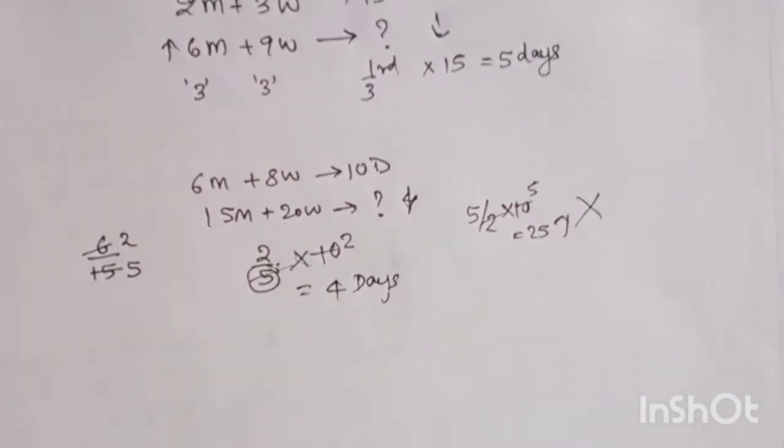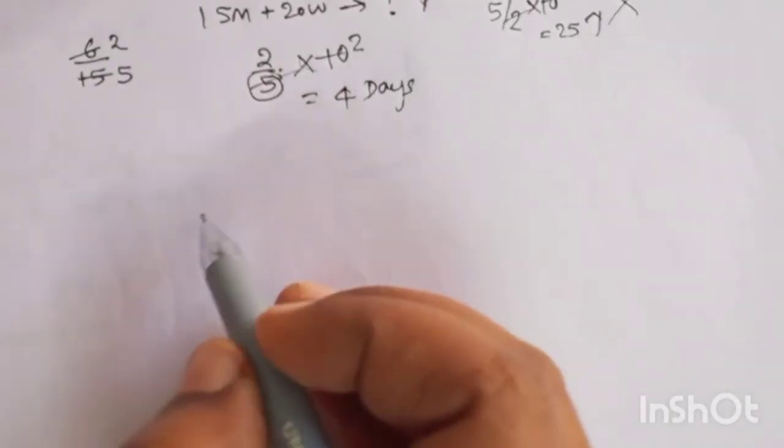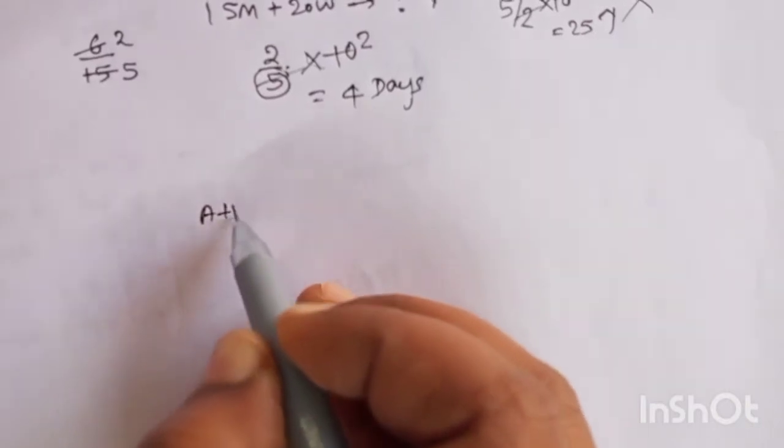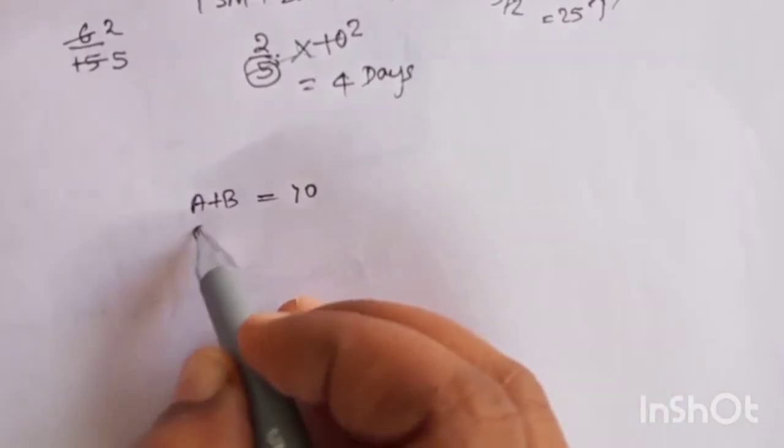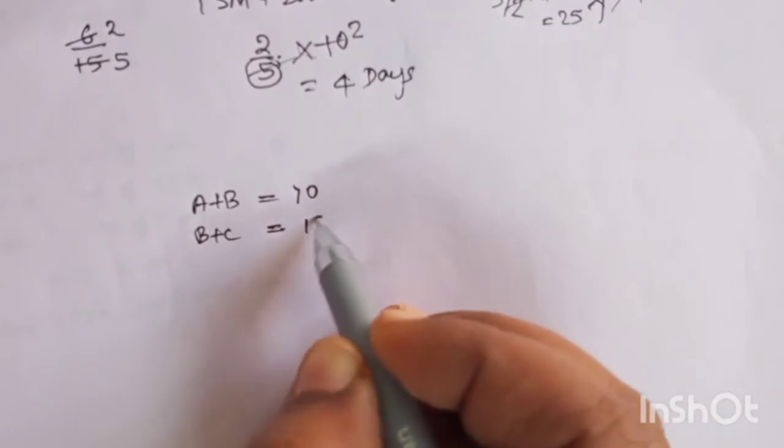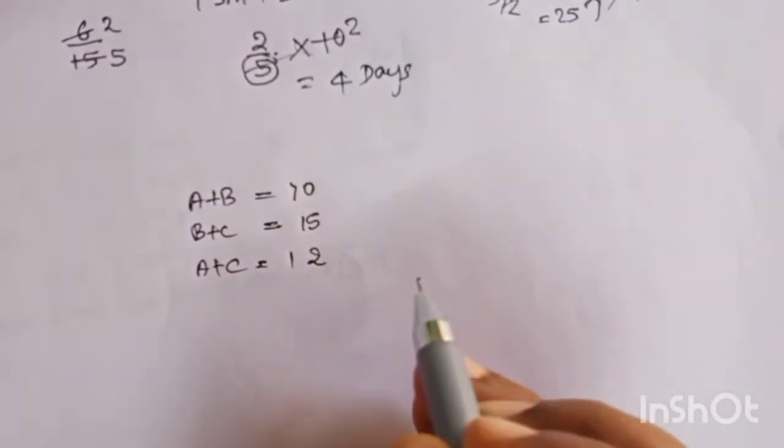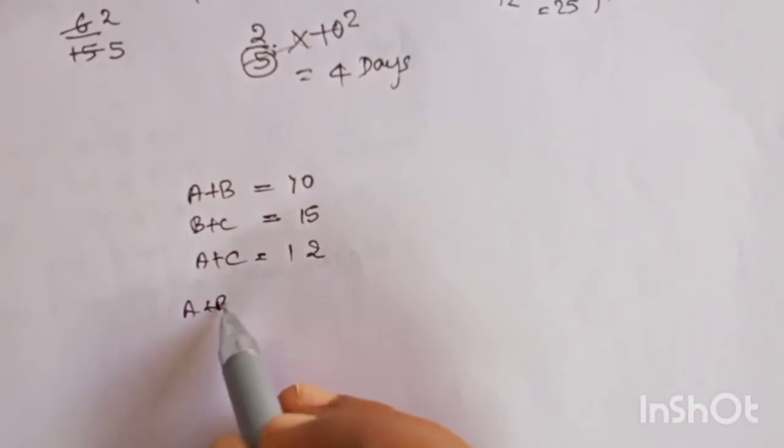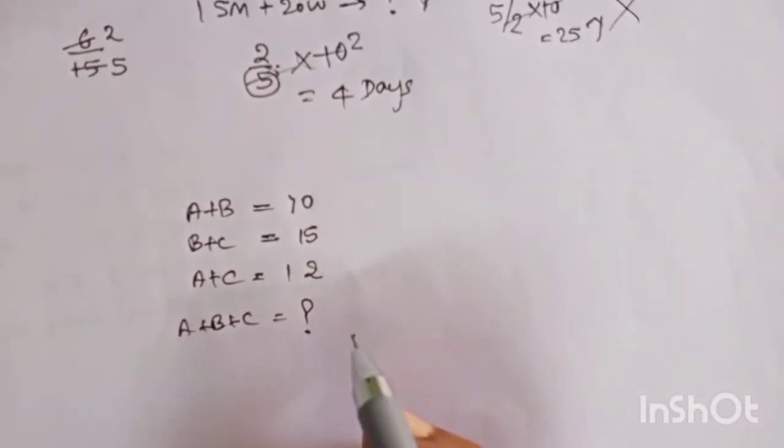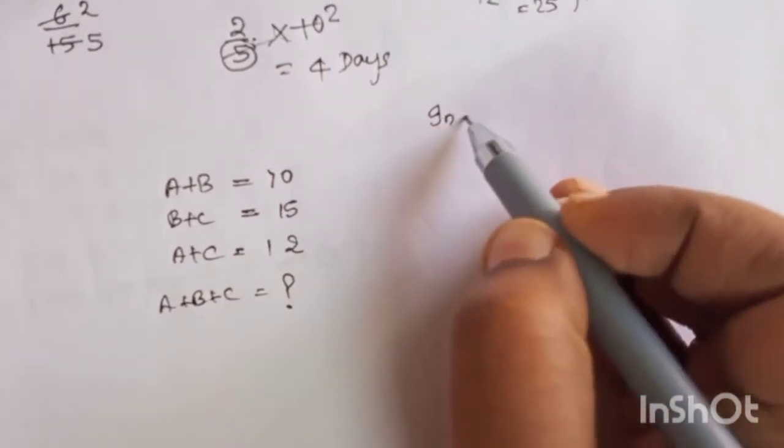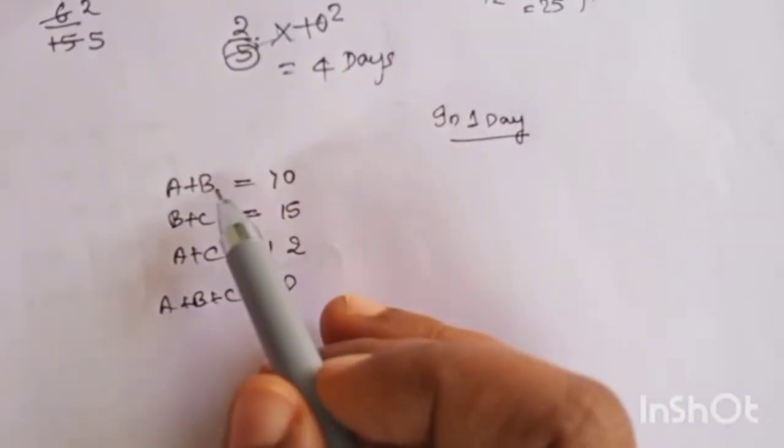Okay, now let's see when there are 3 people. Suppose A plus B are doing a work in 10 days, B plus C are doing work in 15 days, A plus C doing work in 12 days. Then A plus B plus C will require how many days? So let's use the concept of in one day.